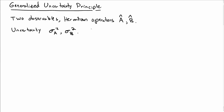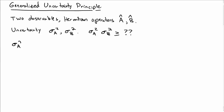In this video, I want to prove the generalized uncertainty principle. Consider two Hermitian observables A and B. They have uncertainty sigma-A and sigma-B. The generalized uncertainty principle will be something like sigma-A squared times sigma-B squared is greater than or equal to something.